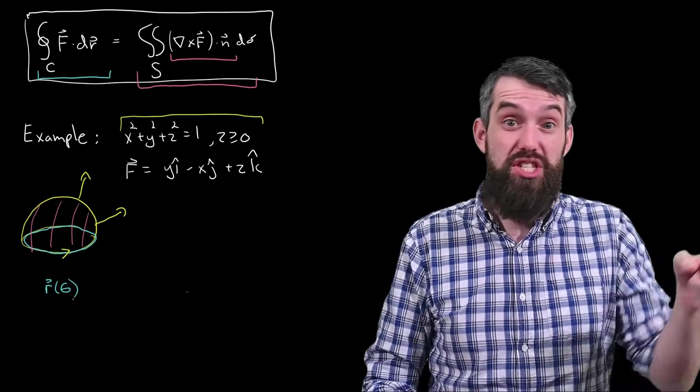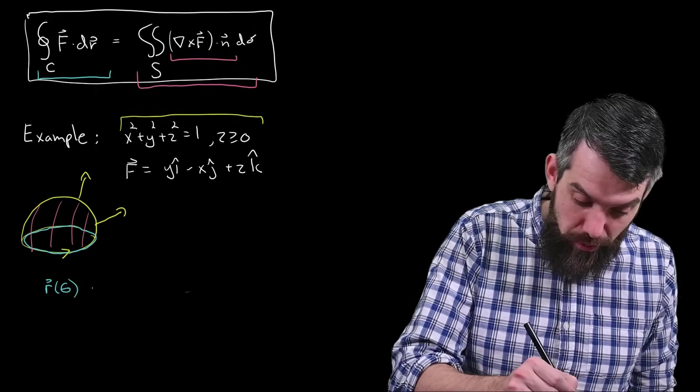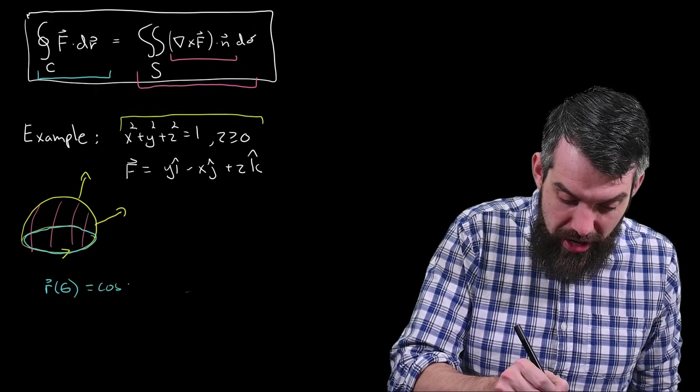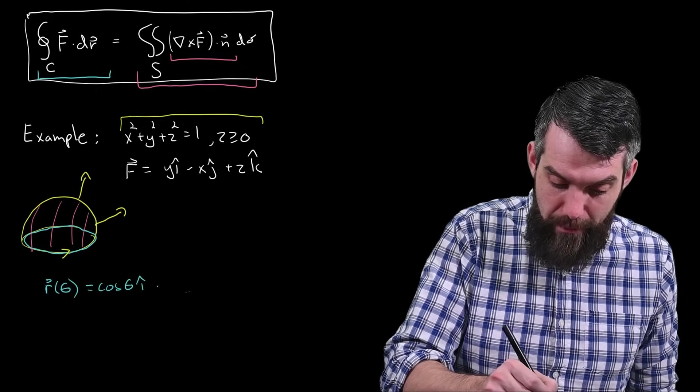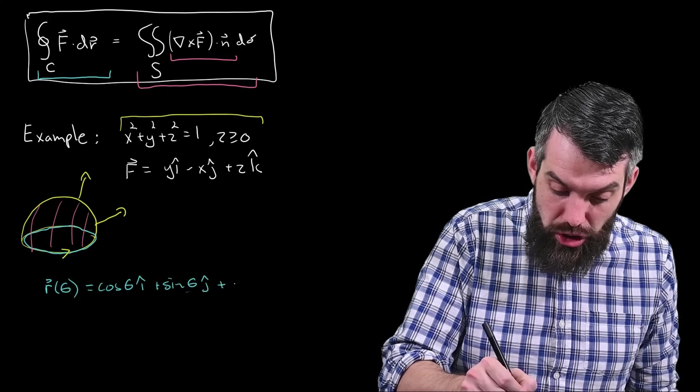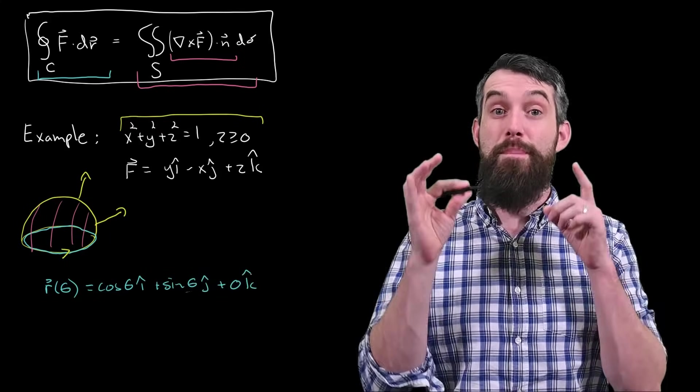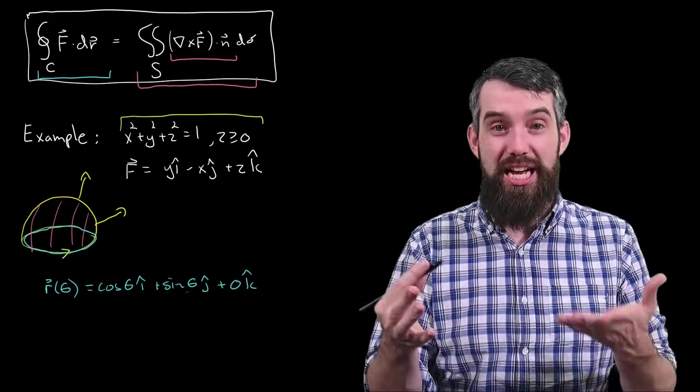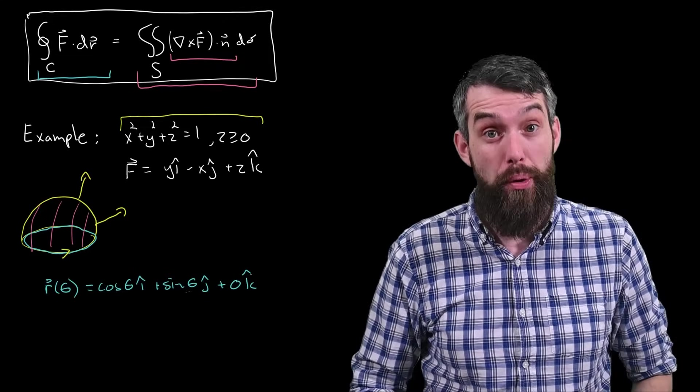I'm going to have a parameterization for that boundary curve. I'm going to parameterize it in theta. The boundary curve is just this unit circle. And so I'm going to write this as cosine of theta with radius 1 in the i-hat, sine of theta in the j-hat, and then 0 in the k-hat because that boundary circle is in the xy-plane. It has no k-hat component.